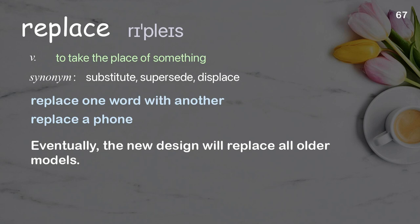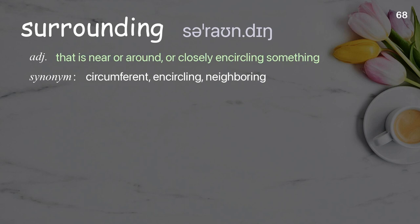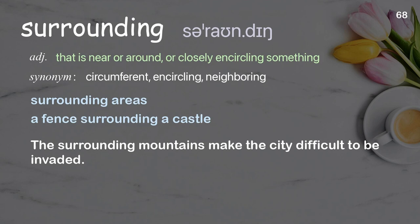Surrounding: that is near or around, or closely encircling something. Examples: surrounding areas, a fence surrounding a castle. The surrounding mountains make the city difficult to be invaded.